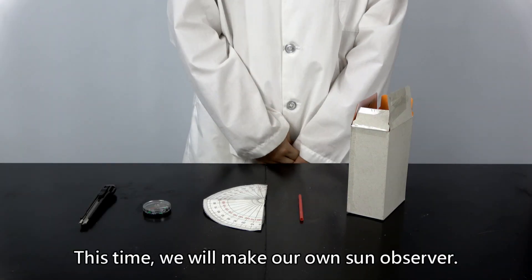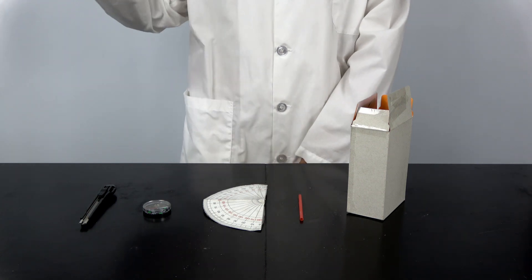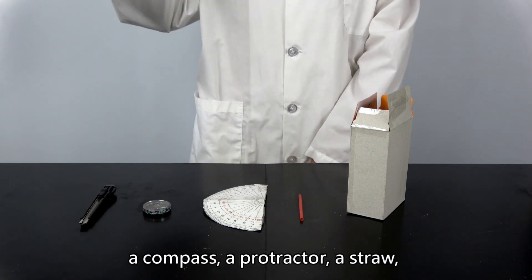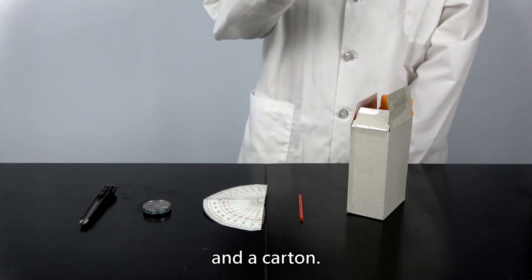This time, we will make our own sun observer. We need a cutter, a compass, a protractor, a straw, and a carton.